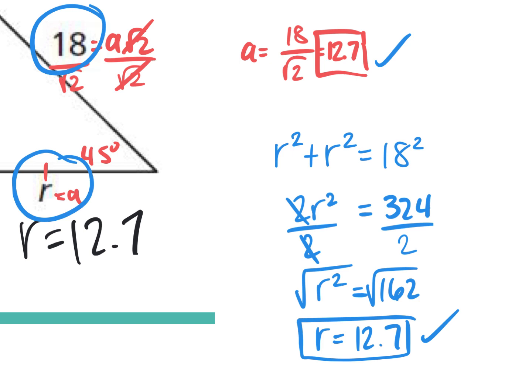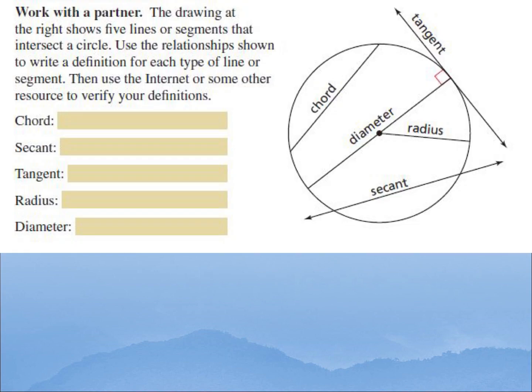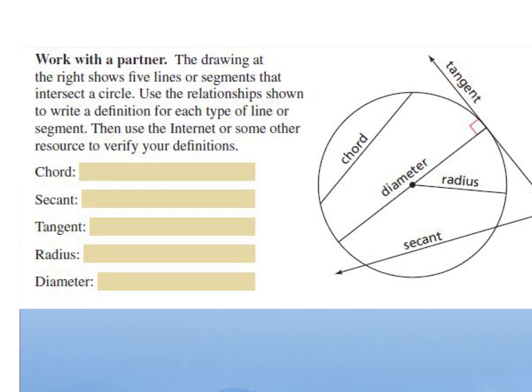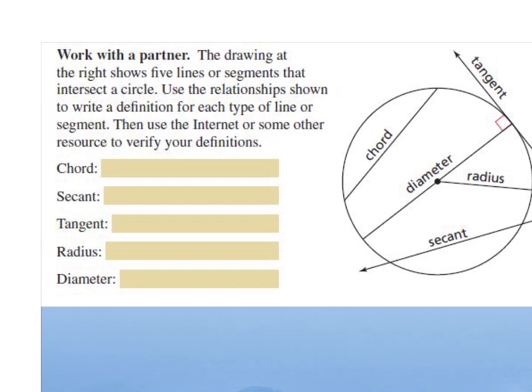We're going to start today with Lesson 10.1. This involves a new geometric shape called a circle. The first thing I want you to do is look at all five different vocabulary words labeled on the circle on the right: a chord, a secant, a tangent, a radius, and a diameter. Right now, try to write down a small definition next to each one. Let's do one together — find the chord on the diagram.